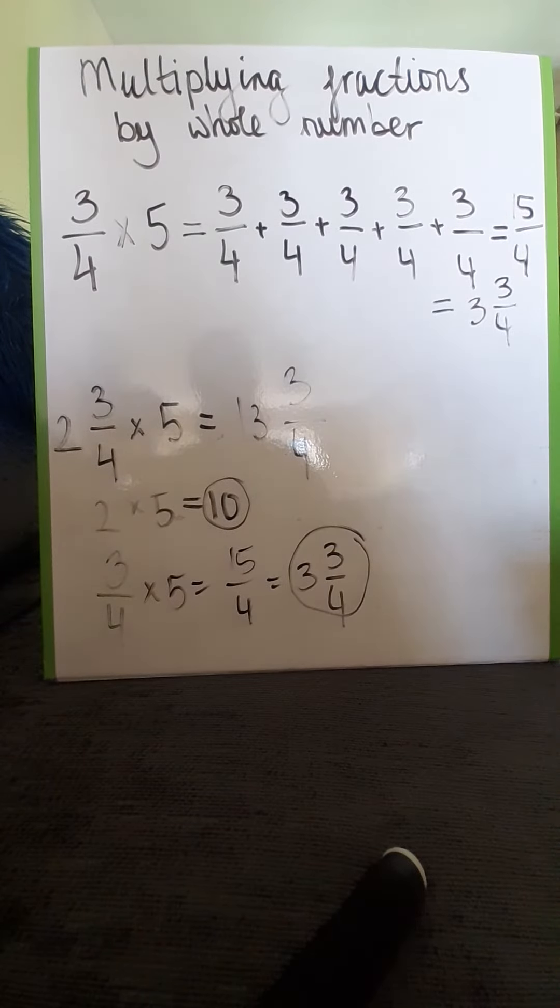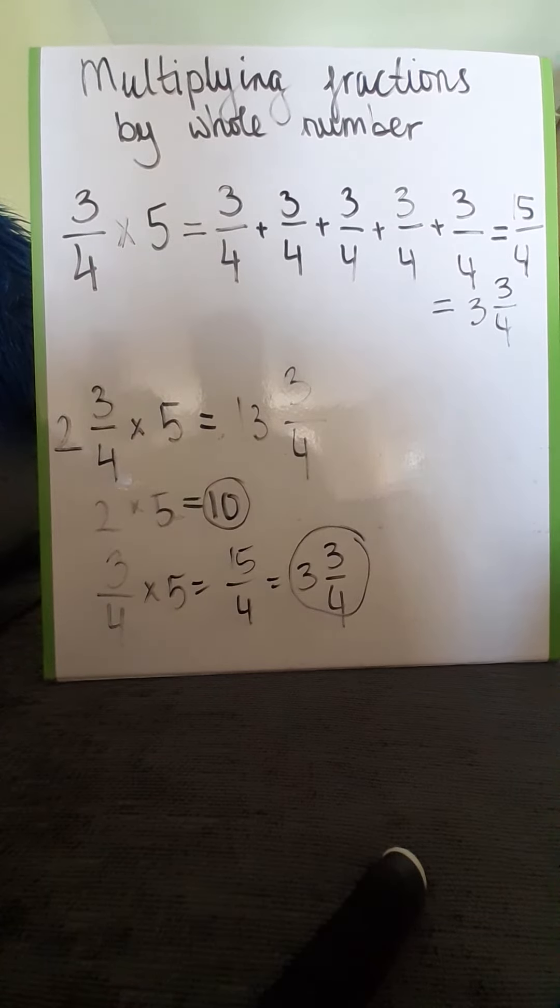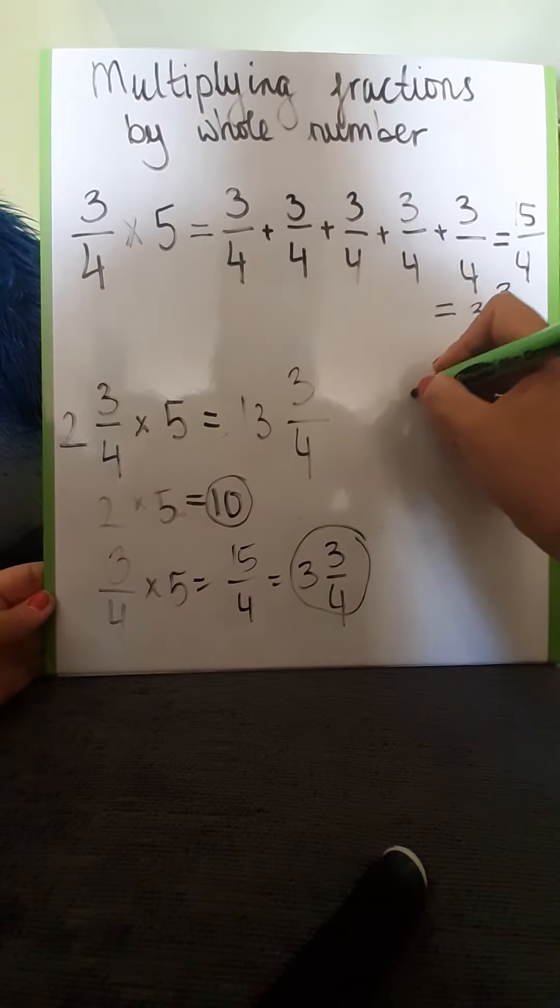You could use another method here, so we could turn this mixed number into an improper fraction, so that's 2 times 4 which is 8 and then add 3 which is 11, so that's 11 quarters.